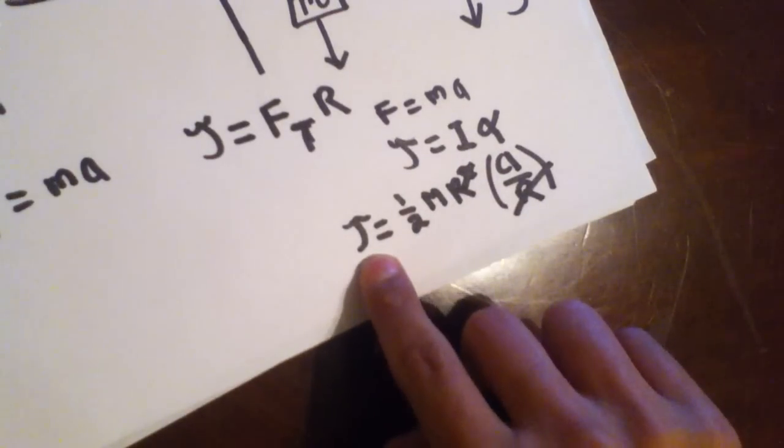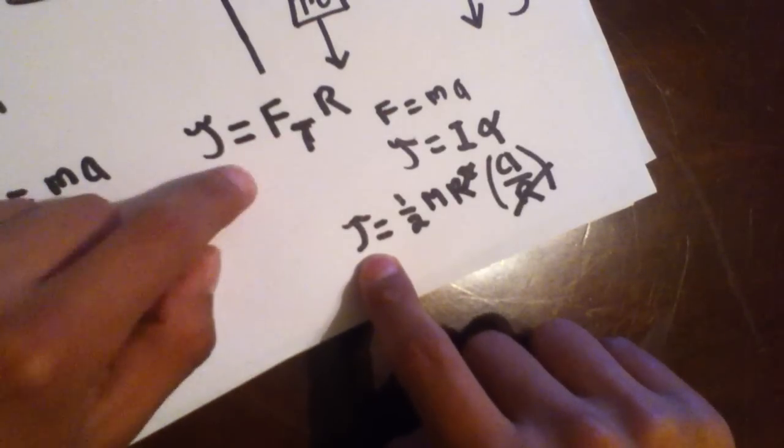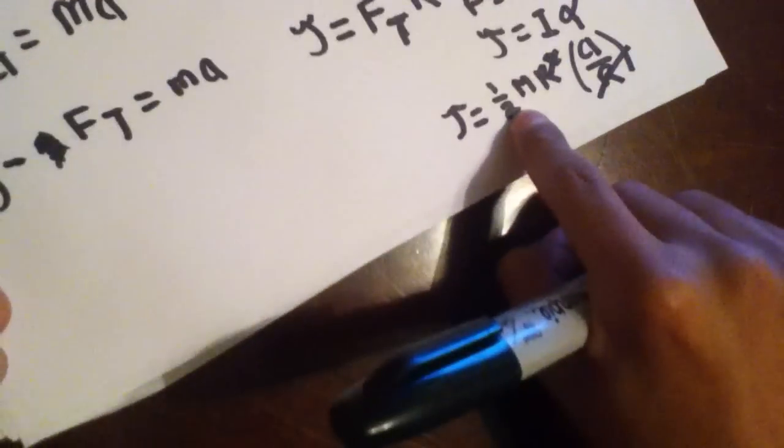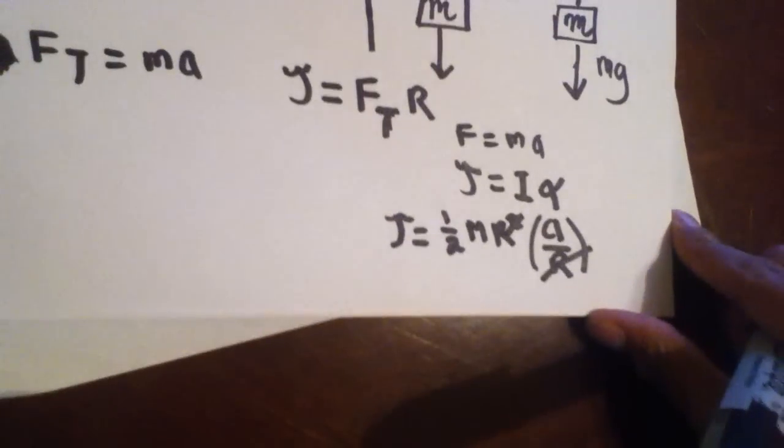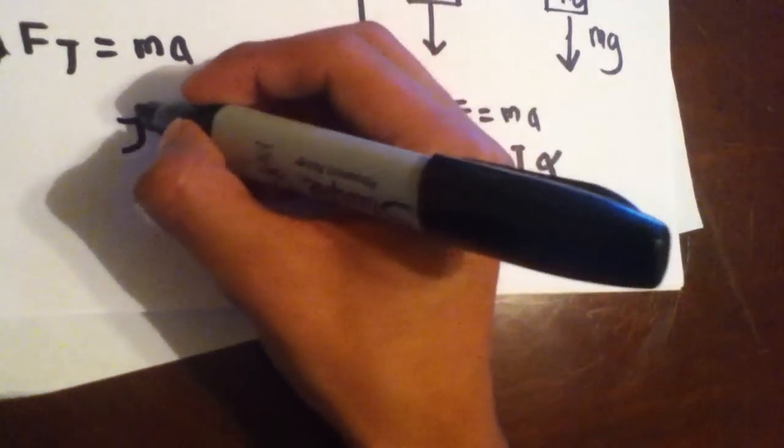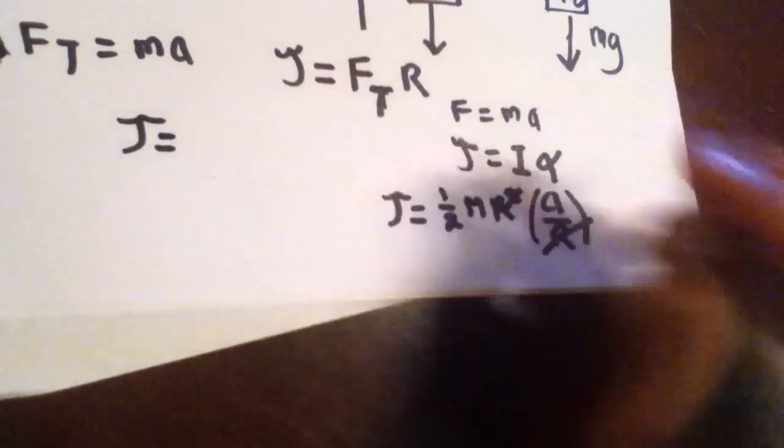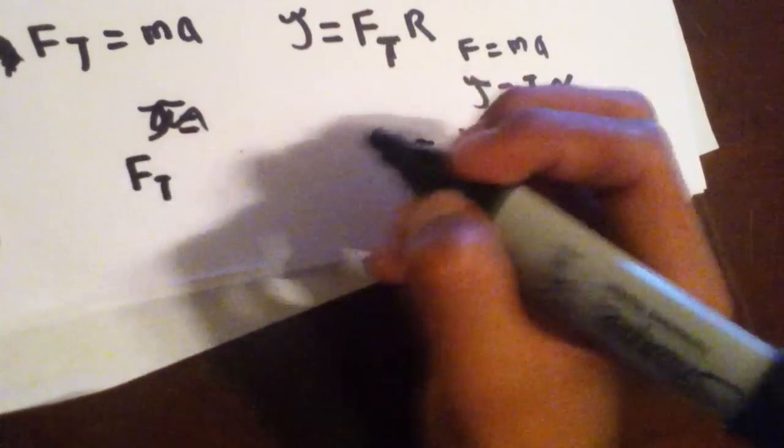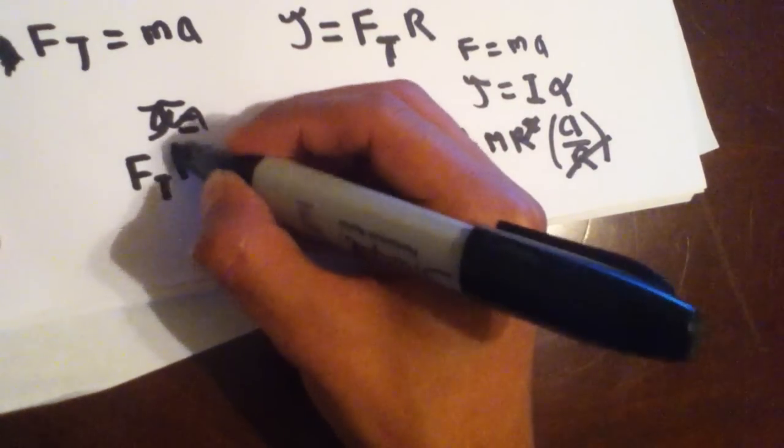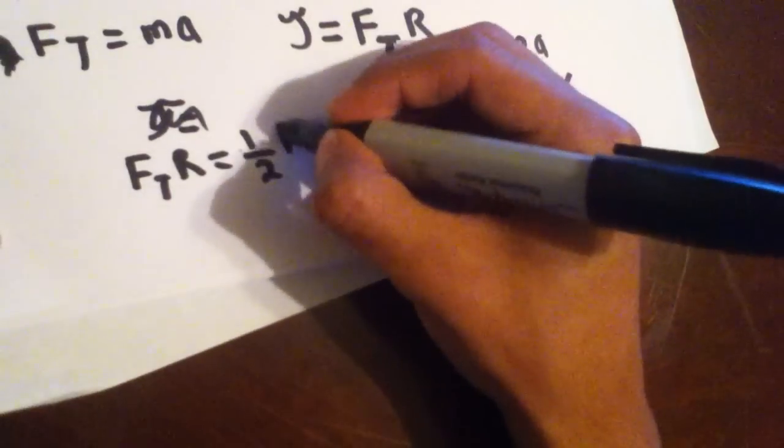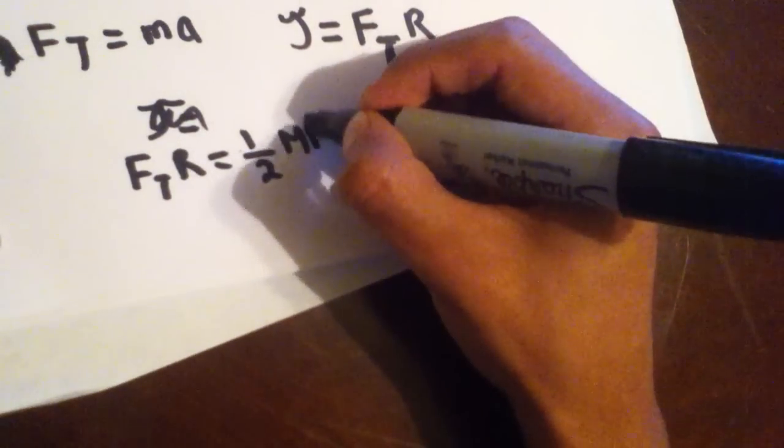And then, see this T? We already know what it is. It's here, look. The torque equals that. So, I'm going to rewrite this equation, alright? And that's going to... So, FT, force of the tension, times radius equals one-half MR A.